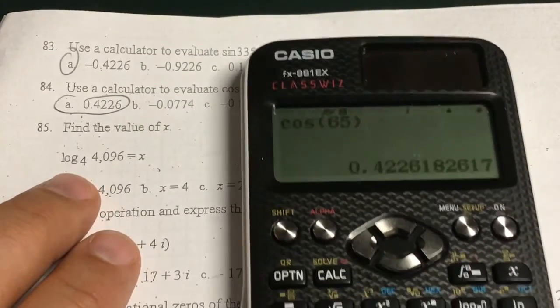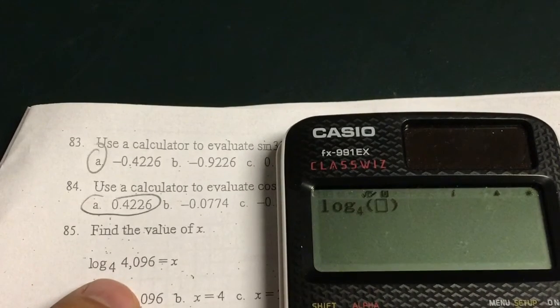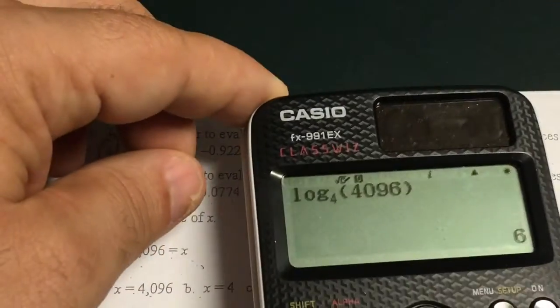Logarithm. These are kind of fun if you choose the right button. You want to choose this log base button. And then just plug it in like it looks. Put the 4 there. Right arrow. And then you put in the 4096. And it squeezes out the answer pretty nicely. 6.